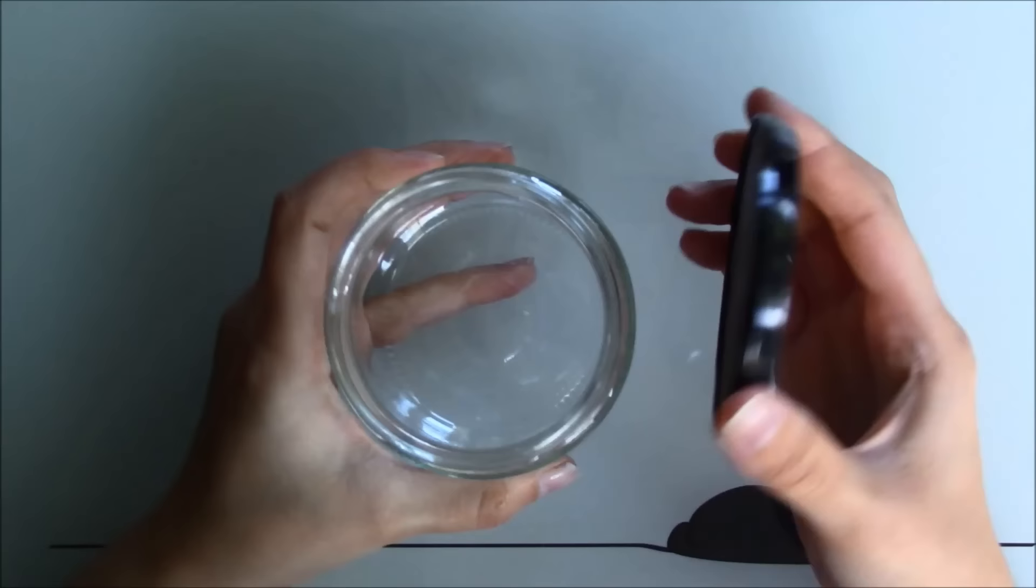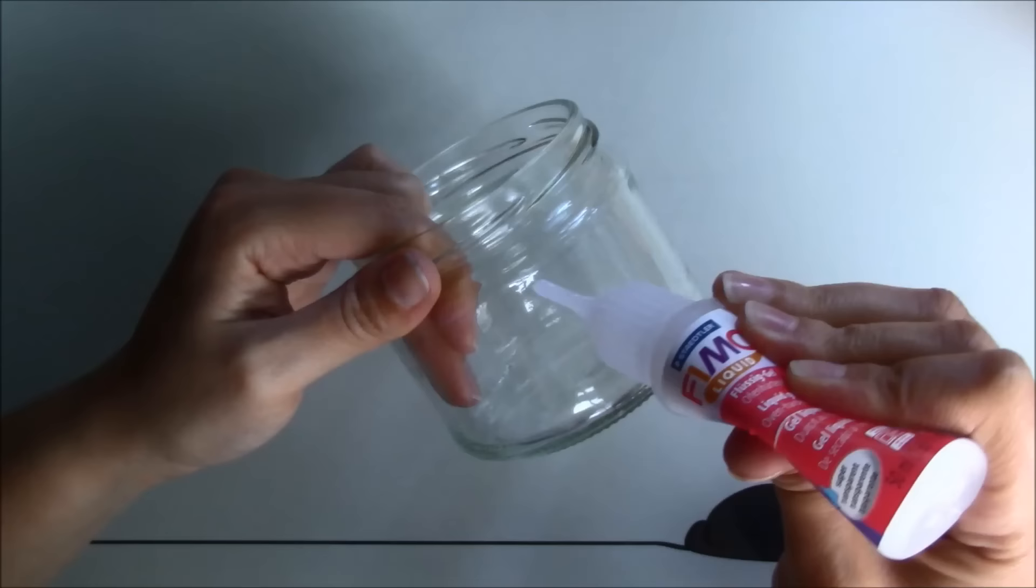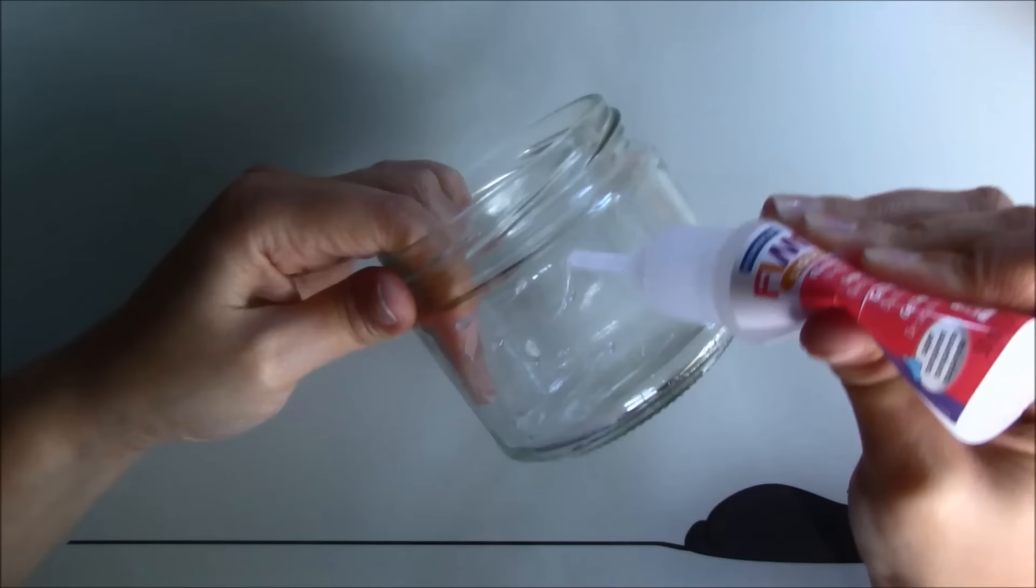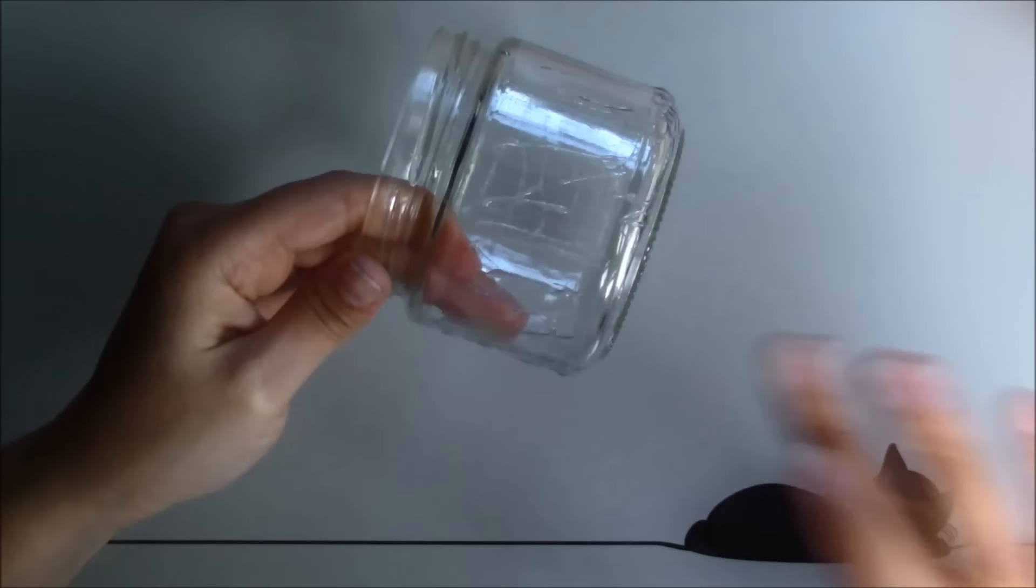For this project I used a regular glass jar. I removed the label and washed it thoroughly. I spread Fimo liquid all over it with my finger and used a small brush in smaller areas. This will ensure that the clay sticks to the glass.